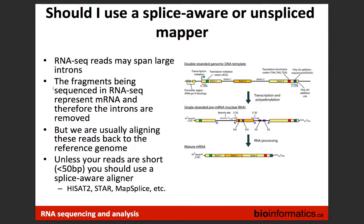A question was raised about whether HiSat can map small RNA like microRNA. The recommendation is that reads cannot be shorter than 30 base pairs for HiSat. HiSat is capable of aligning long reads — longer than 200 base pairs — but it's not clear whether it can handle very short reads like microRNAs.